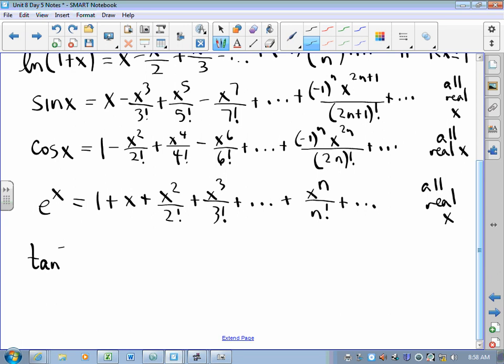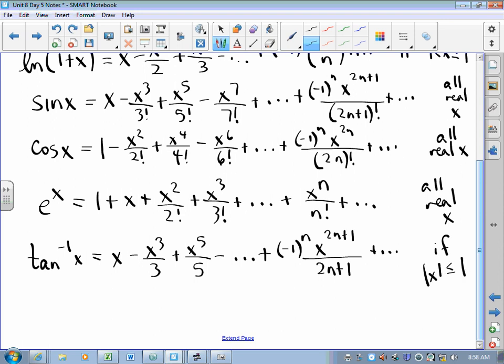And then the one that rarely ever shows up on an exam, but they say that it's required, is the inverse tan. Inverse tan is x - x³/3 + x⁵/5 and so on, so that the nth term is (-1)^n x^(2n+1)/(2n+1), and so on. But that only converges if the absolute value of x is less than or equal to 1.